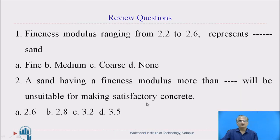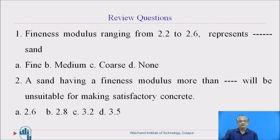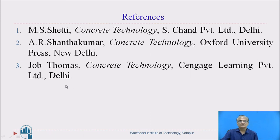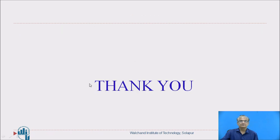Here are a few review questions. Answer to question number one: a fineness modulus ranging from 2.2 to 2.6 represents fine sand — answer is A, fine sand. Question two: a sand having a fineness modulus more than blank will be unsuitable for making satisfactory concrete — answer is C, 3.2. These are the references for today's session. Thank you.